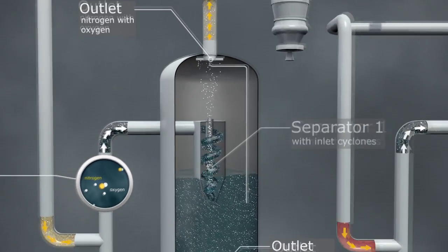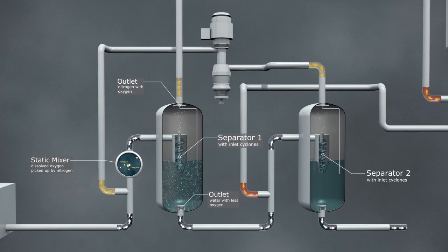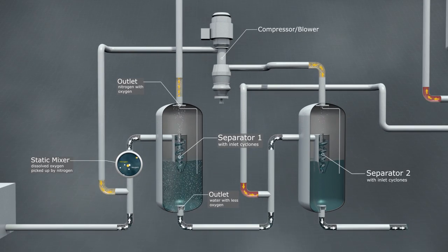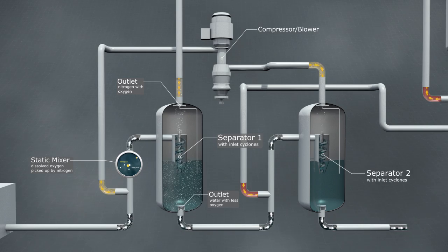The water now containing less oxygen is transported away from the separator. After the first stage, 90 to 95% of the dissolved oxygen is removed.